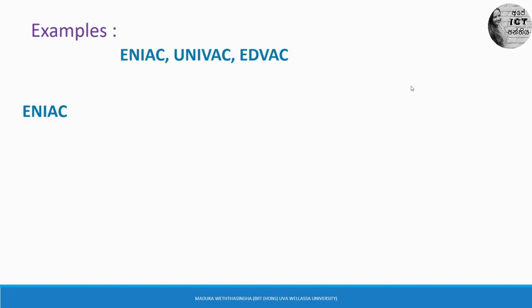What are the computers developed using vacuum tubes? ENIAC, UNIVAC, and EDVAC. You have to remember those names. ENIAC stands for Electronic Numerical Integrator and Computer. These are the computers built in the first generation using vacuum tubes.